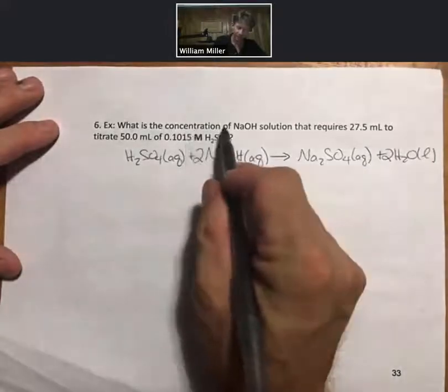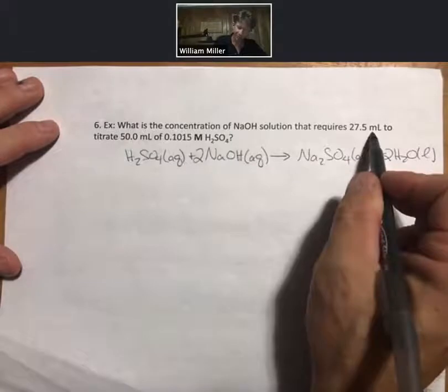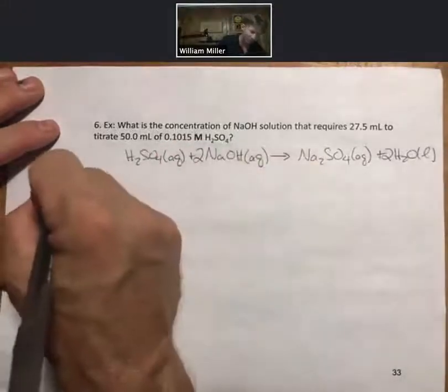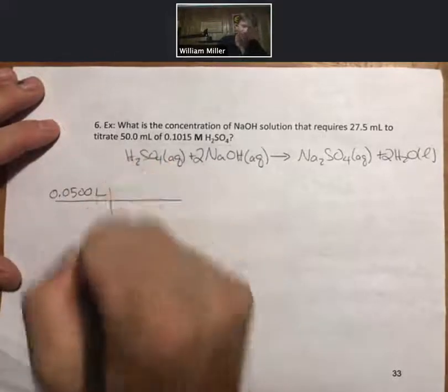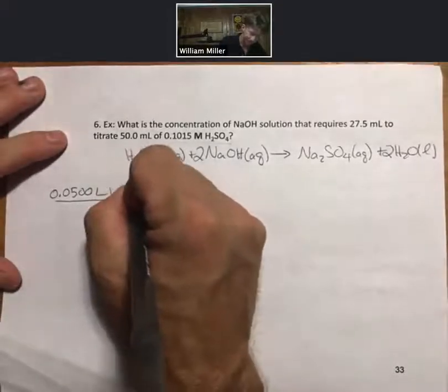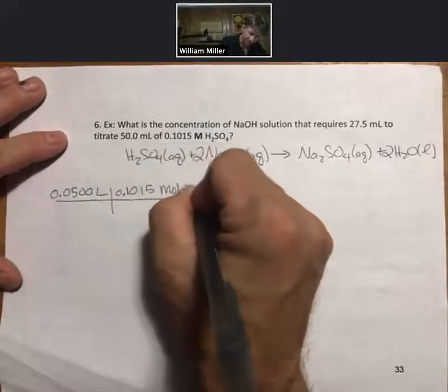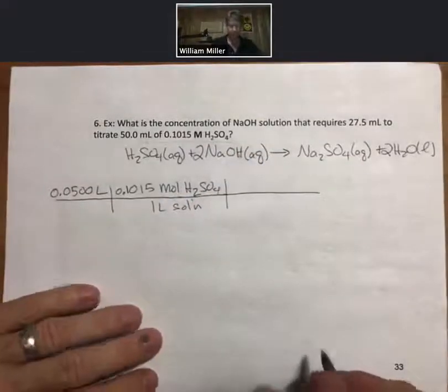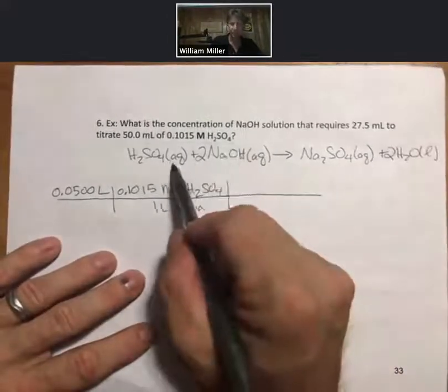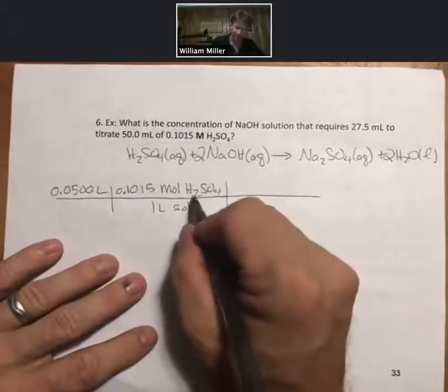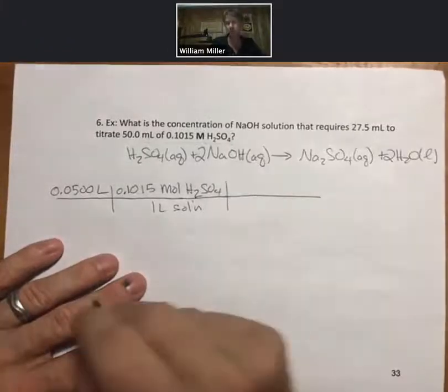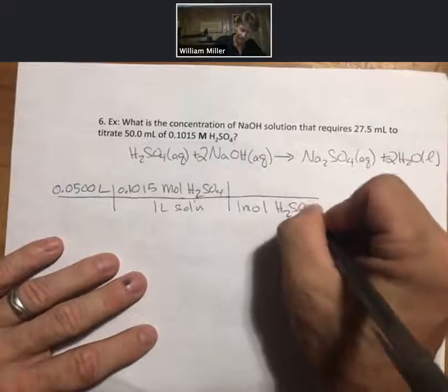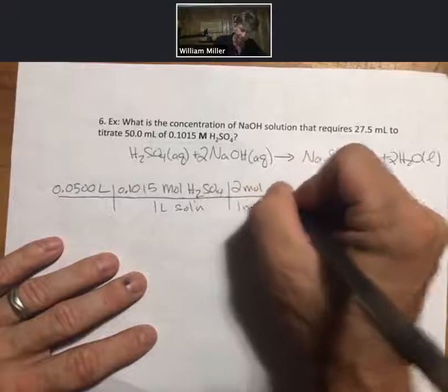Now we're looking for the concentration of sodium hydroxide. Requires 27.5 milliliters to titrate 50 milliliters of 0.015 molar sulfuric acid. We have enough information to get our moles of sulfuric acid. 0.015 moles of sulfuric acid per liter of solution. Since we're at the equivalence point, we have stoichiometric amounts. We will use the mole to mole ratio to find how many moles of sodium hydroxide reacted. For every one mole of sulfuric acid, it takes two moles of sodium hydroxide.